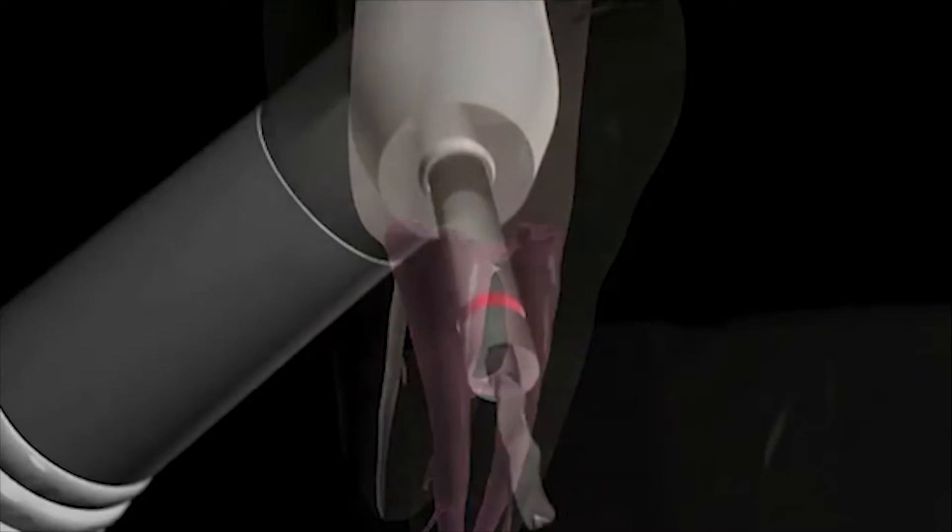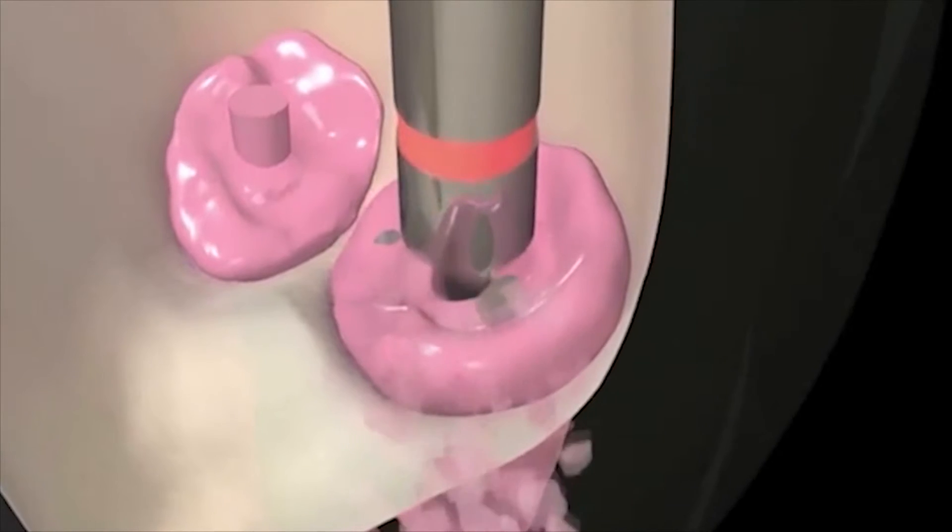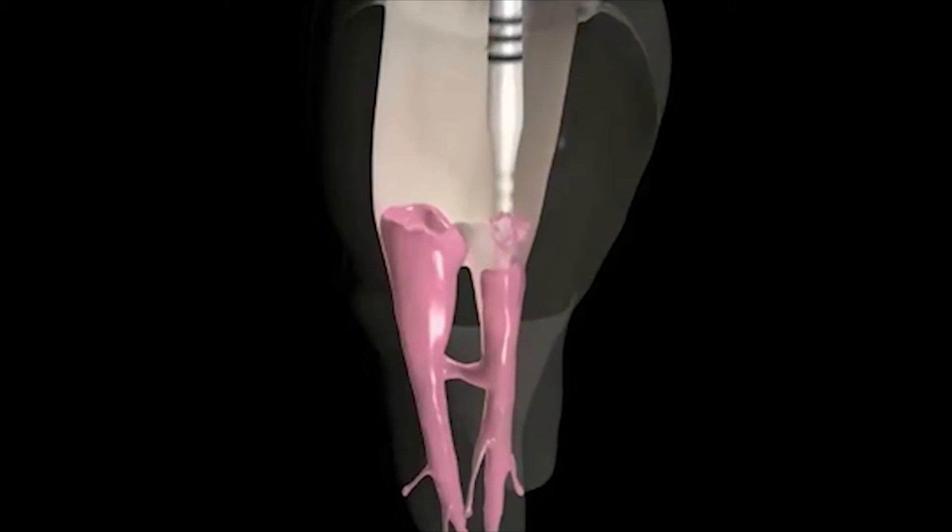GuttaCore obturators remove easily like gutta-percha because they are gutta-percha through and through. You'll see the familiar shredding characteristic, whether you're creating post-space or retreating.